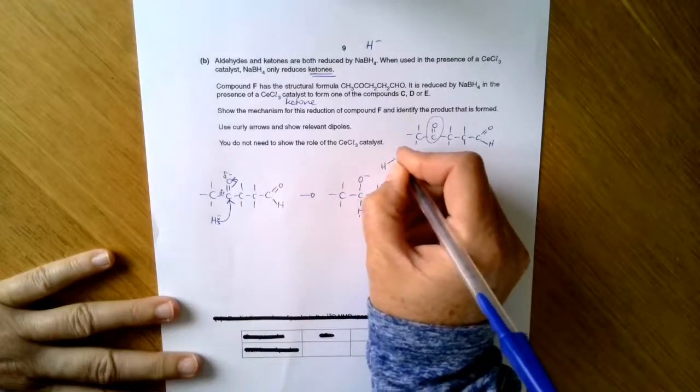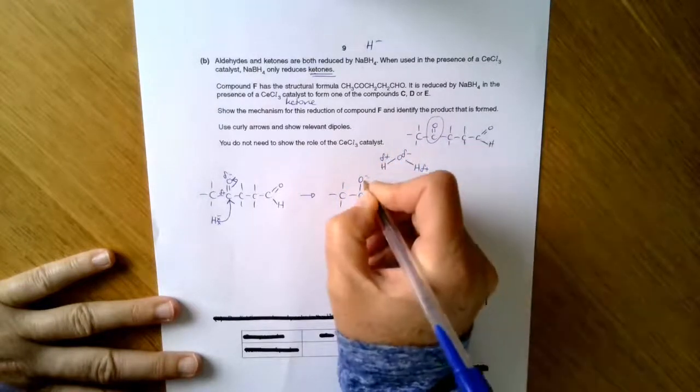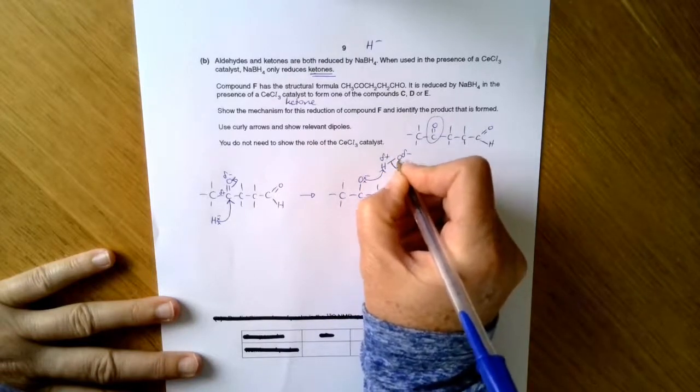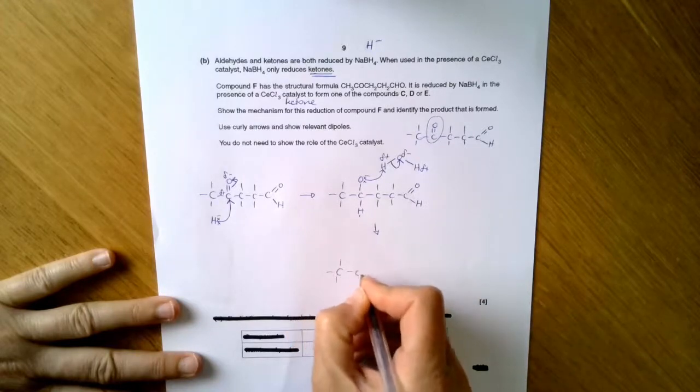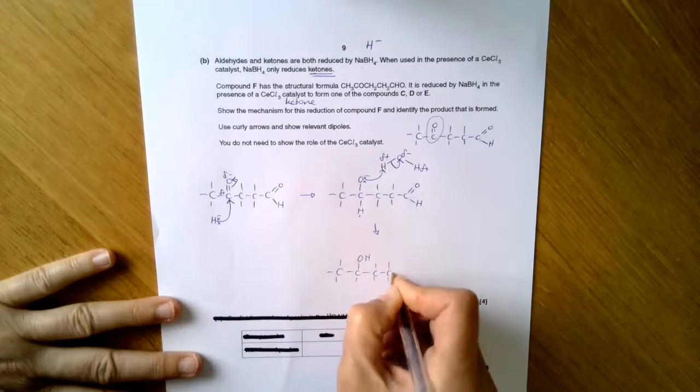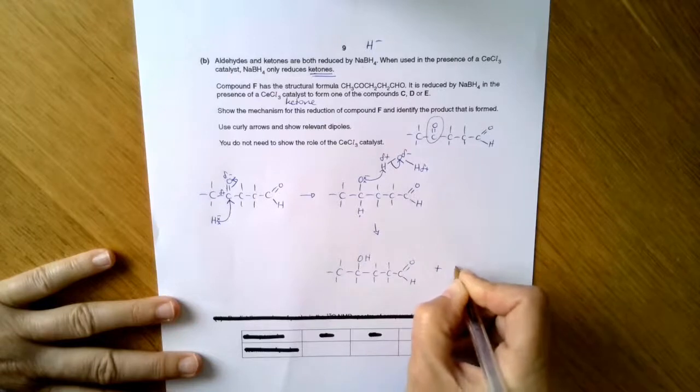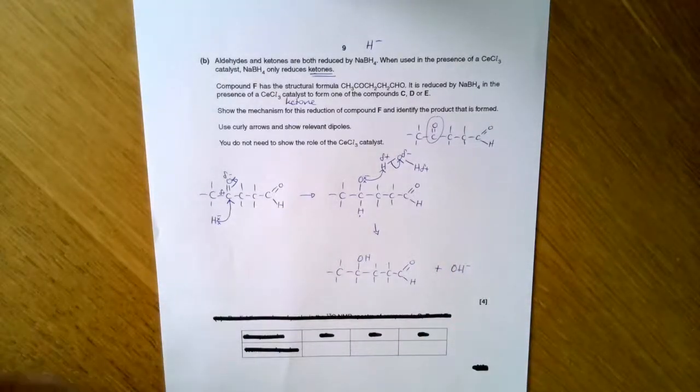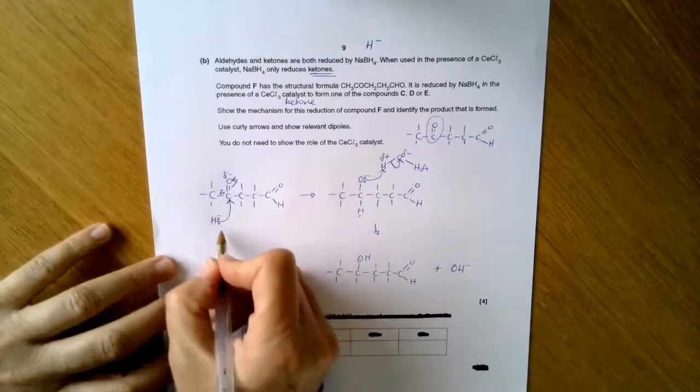So I've got HOH for my water. Label my dipoles, lone pair of electrons attacks the hydrogen, breaks the hydrogen oxygen bond. Then get OH on here. And I get an OH minus ion.